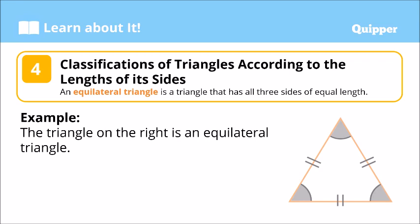Another classification based on the side is what we call the equilateral triangle. It has all three sides of equal length — lahat ng sides ng triangle na ito ay equal. It also means that the three angles are also equal. That's an equilateral triangle.